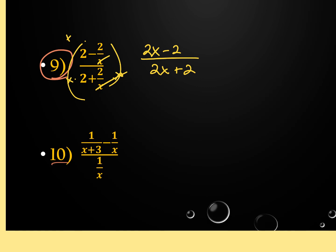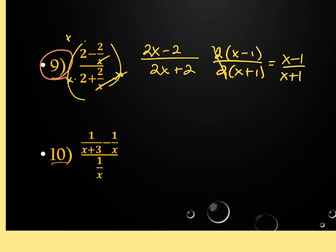On the previous problem, every term is divisible by 2, so you can factor out a 2 from top and bottom and cancel, getting (x-1) over (x+1). If it was 2x-3 and 2x+2, you couldn't cancel the 2 from just part of it — every single term must be divisible by 2 for that to work.